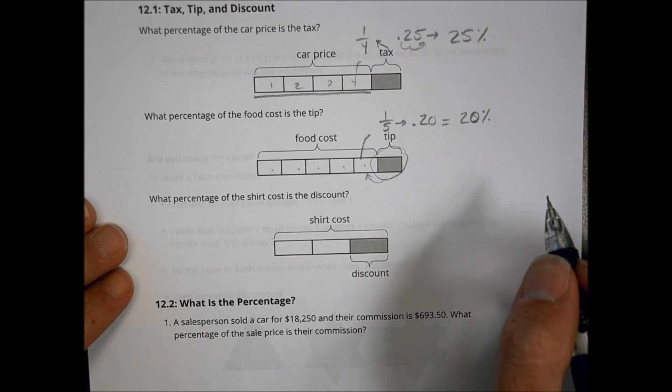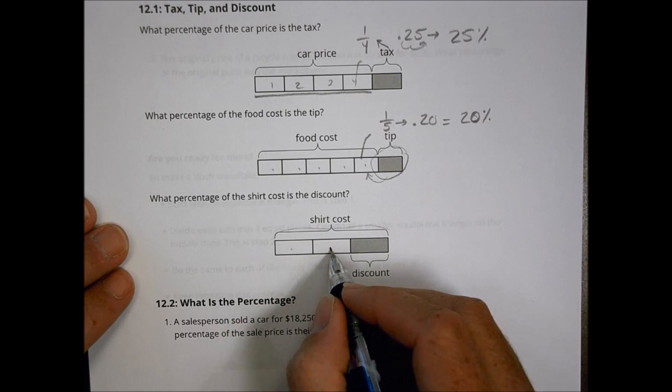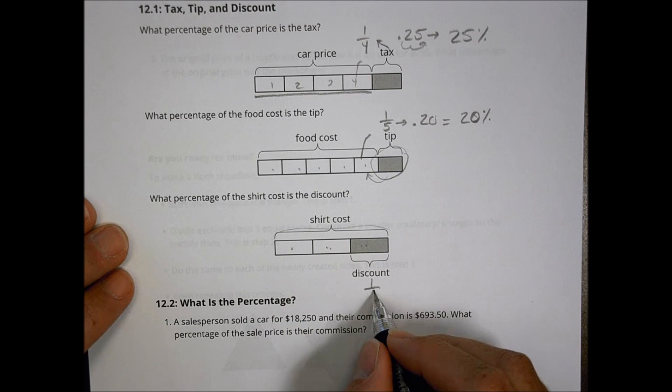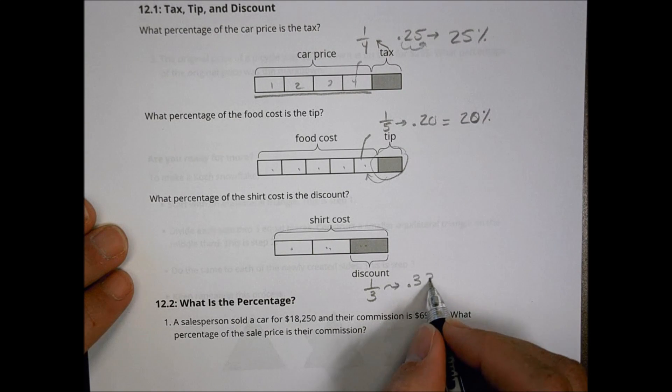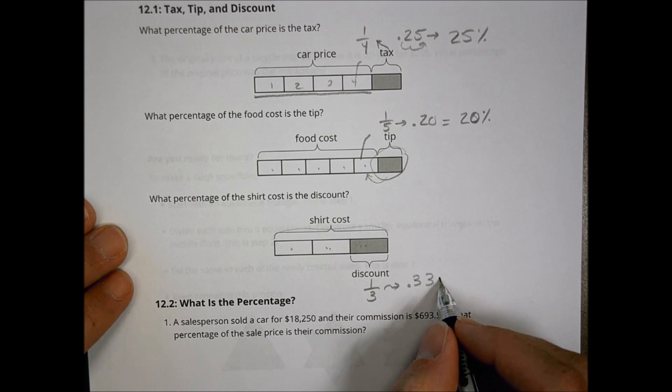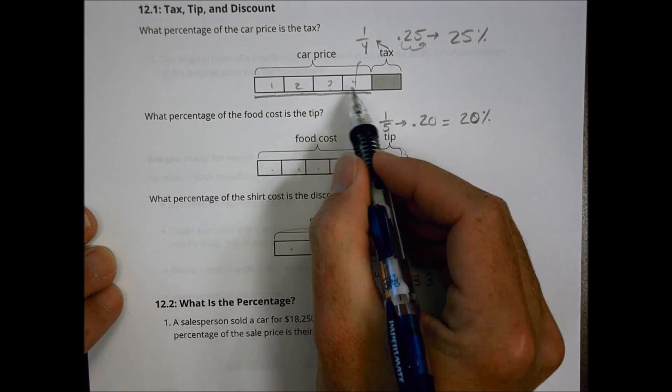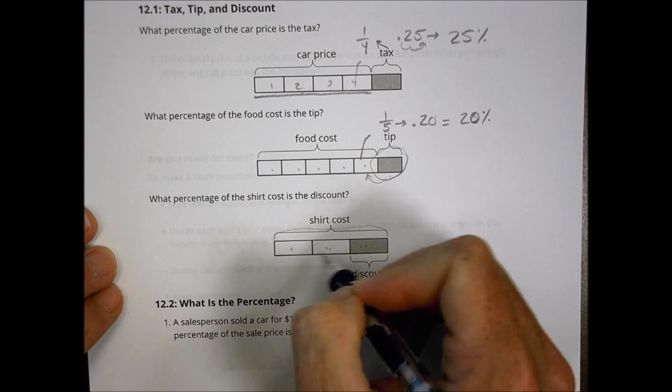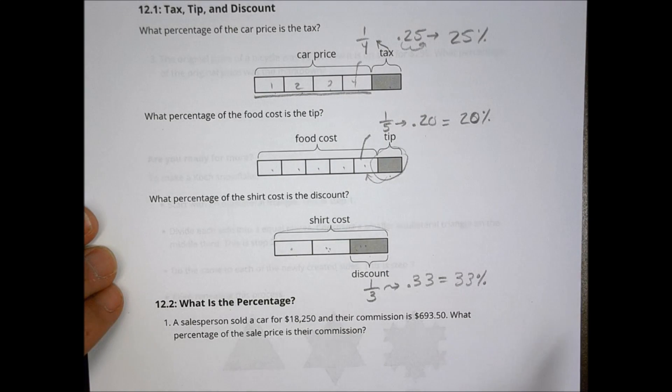For what percentage of the shirt cost is the discount. We have the whole amount here, which is broken into three sections. So it's broken into thirds. So the discount is going to be about one-third. One-third, we have to approximate, is going to be about .33 and go on for a long time, which is about 33% is what that discount is going to be. So for each of these examples here, you have to look at the information that's provided, and notice that the size that's shaded matches the corresponding parts here to get the fractional value, which you convert to a decimal, and then convert into a percentage.